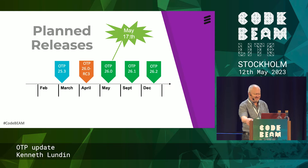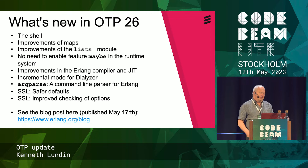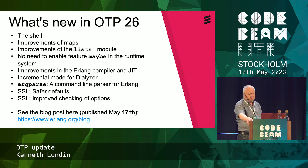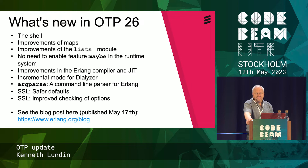Here is what's new: quite a lot of things in the shell, improvements of maps, improvements in the lists module, and the maybe feature. The feature concept and its changes, improvements in the Erlang compiler and the JIT, and incremental mode for Dialyzer. ArgParse is a new module, and there are some SSL improvements. You can read all about this in the blog post we will publish next week together with the release.